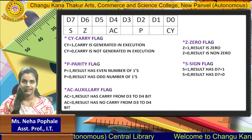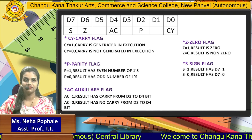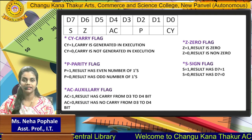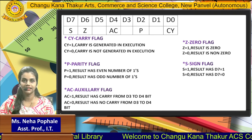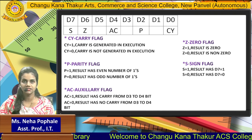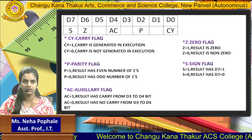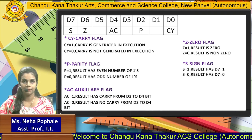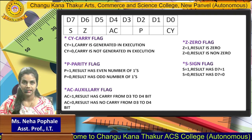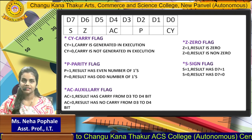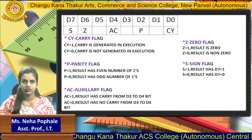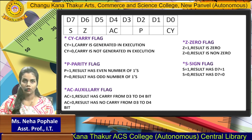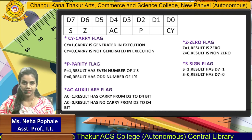Next is the parity flag. The parity flag is set to 1 when the result of the last operation has an even number of 1s; otherwise it is set to 0.